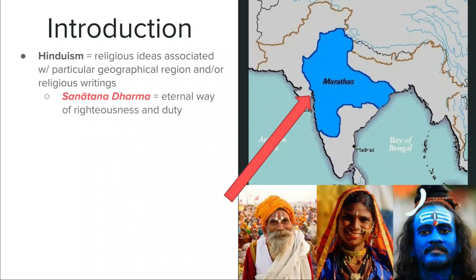Hinduism, as a large umbrella term, is not necessarily what someone who follows that tradition might call it. Often this religion or set of practices is called Sanatana Dharma. Dharma is a word we'll see a lot in eastern religions — it has to do with one's duty, following a certain path as set forth in a certain set of texts. We'll see this in Hinduism as well as in Buddhism, since Buddhism comes out of the Hindu tradition.